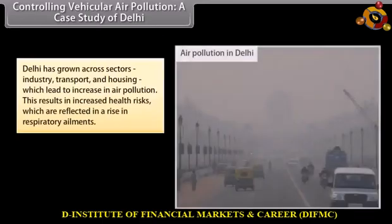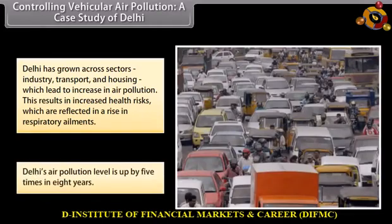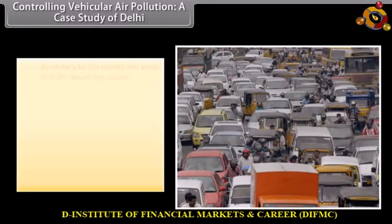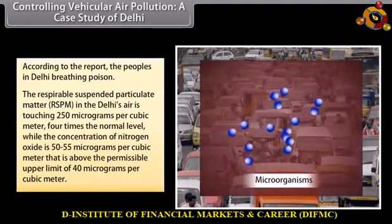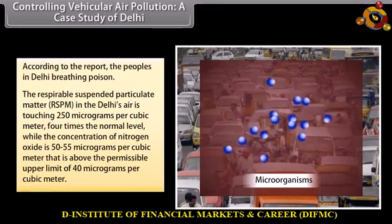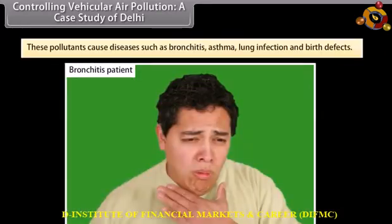Controlling vehicular air pollution — a case study of Delhi. Delhi has grown across sectors: industry, transport, and housing, which has led to increased air pollution and a rise in respiratory ailments. Delhi's air pollution level is up 5 times in 8 years. The respirable suspended particulate matter (RSPM) in Delhi's air is touching 250 micrograms per cubic meter — 4 times the normal level — while the concentration of nitrogen oxide is 50 to 55 micrograms per cubic meter, above the permissible upper limit of 40 micrograms per cubic meter. These pollutants cause diseases such as bronchitis, asthma, lung infection, and birth defects.